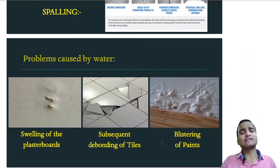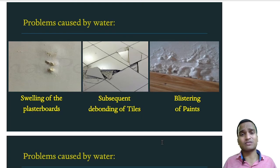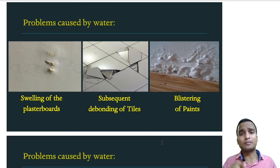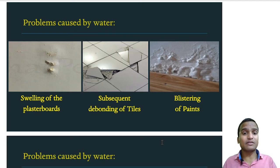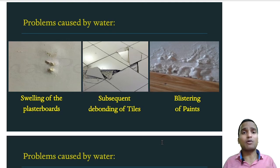Another serious problem caused by water is swelling of plaster boards. When you tap on such a plaster board, a hollow 'dub dub' sound can be heard — this swelling is caused by water ingress. Following this, debonding of tiles occurs, where tiles get misaligned or break into pieces, sometimes compressed and sometimes swelled — all caused by water ingress leading to debonding.